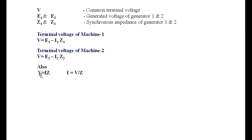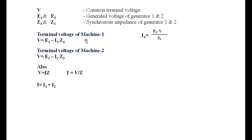The voltage across the load is V and the total current flowing through the load is I, with load impedance Z_L. From the first equation, I1 equals (E1 minus V) divided by Z1. Similarly, I2 equals (E2 minus V) divided by Z2. Adding these: I1 plus I2 equals (E1 minus V)/Z1 plus (E2 minus V)/Z2, which equals I, the total load current.